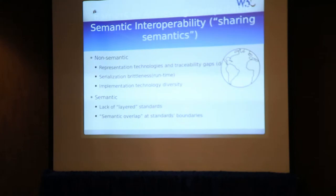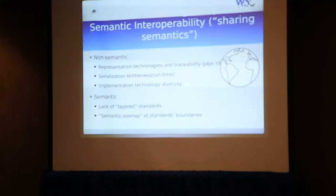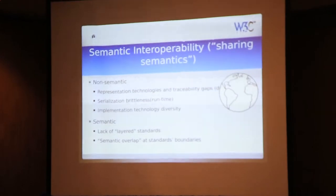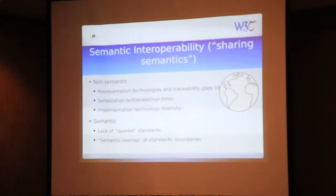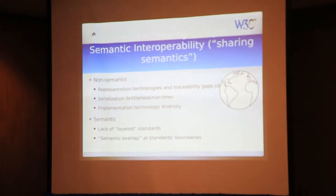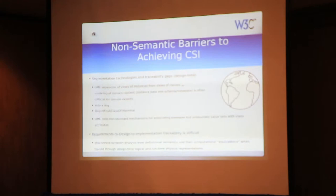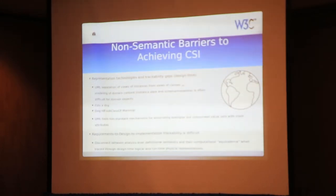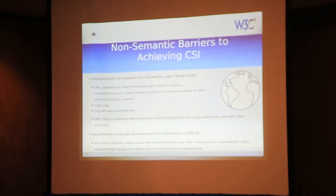There are some barriers to sharing data at a semantic level — some of them are semantic and some of them are non-semantic. RDF, OWL, and all of the machinery of the W3C and semantic web don't really solve the semantic problems. What they do is surface them in a way they've never been able to be surfaced before, by essentially eliminating what I call the non-semantic problems. There are a lot of barriers, and I've partitioned them into non-semantic barriers and semantic barriers. The non-semantic barriers sit around two subject areas: representation and serialization.